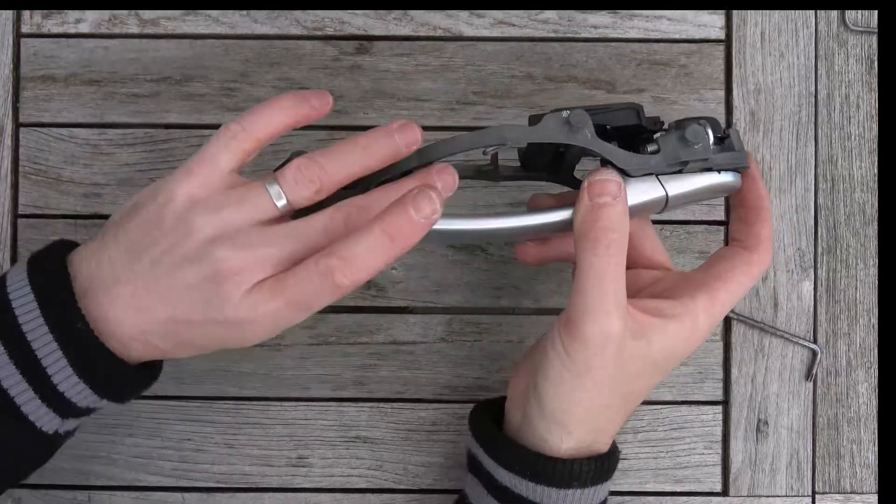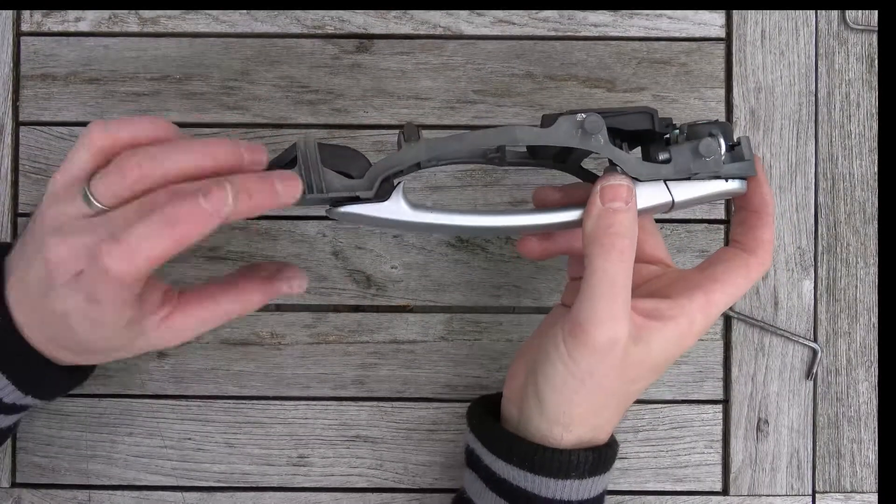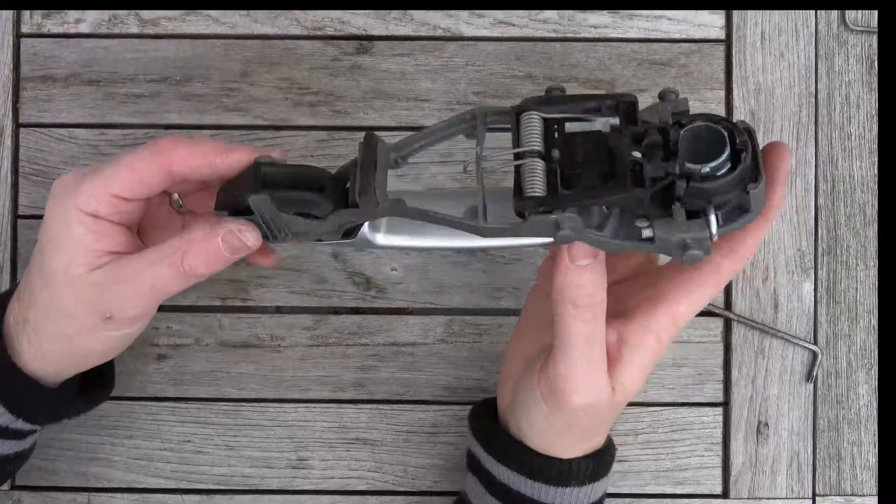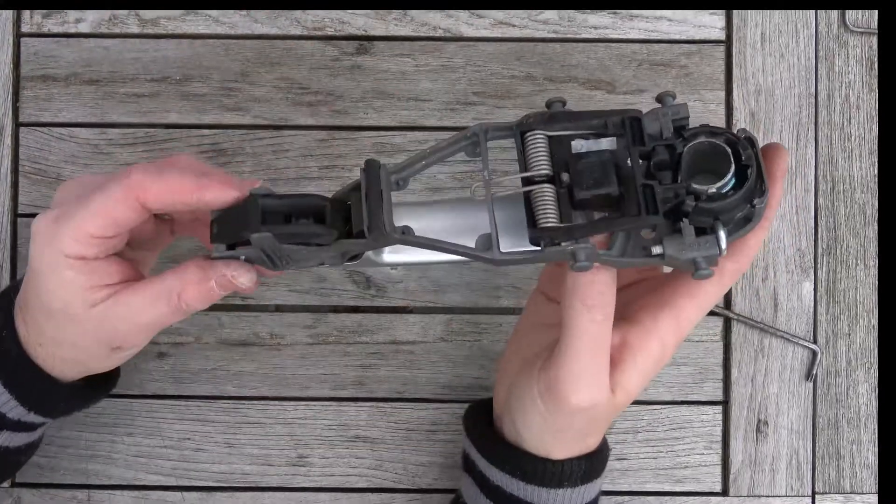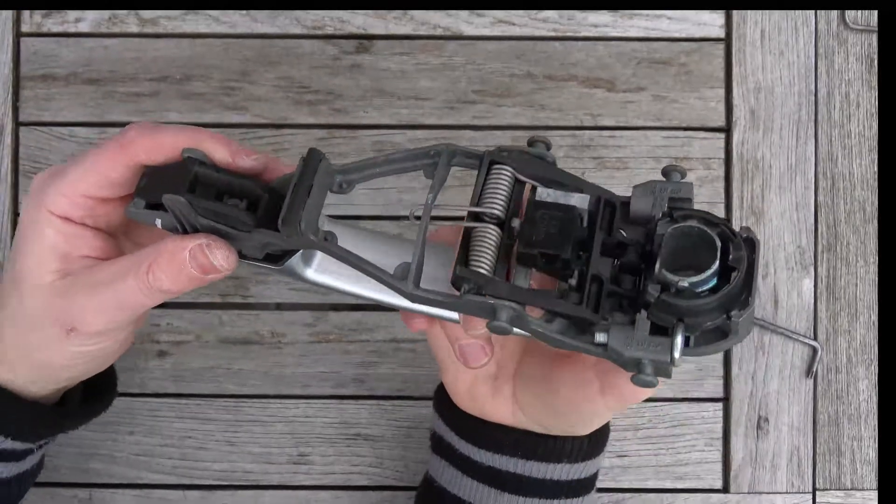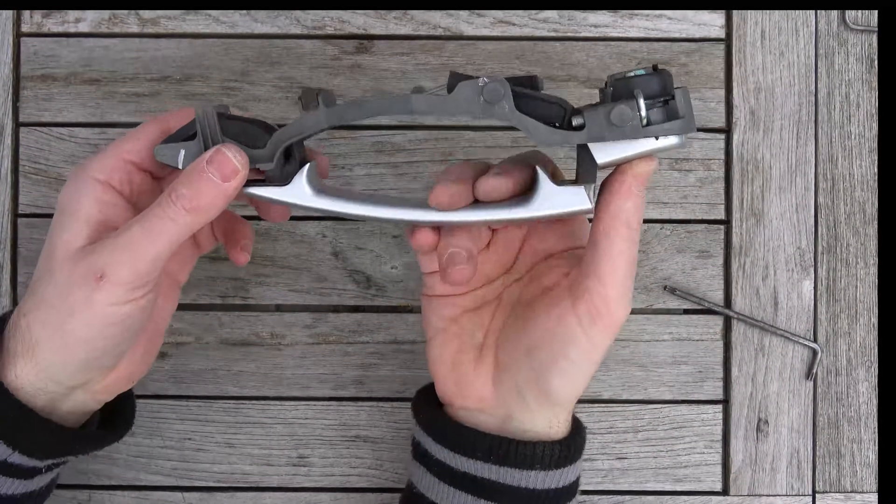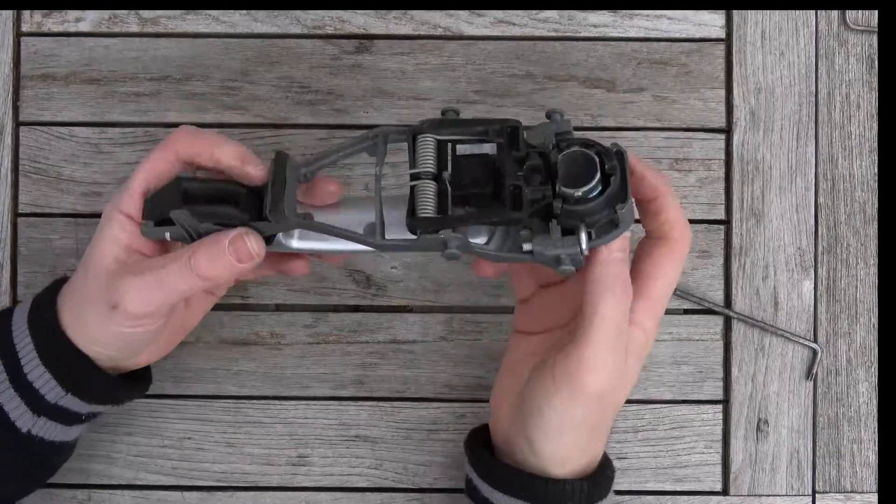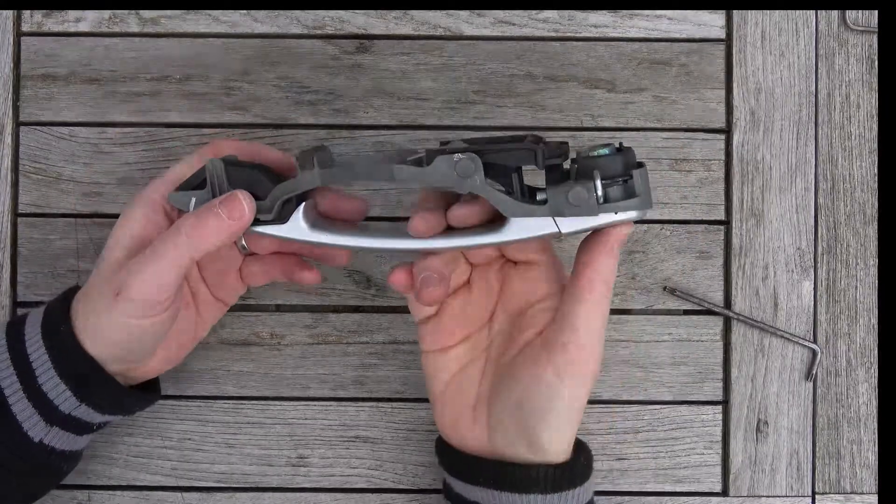But now when you can see it out, it makes a lot more sense. So that is how the door handle works on a Volkswagen Golf Mark 5 and hopefully other models as well. If you enjoyed this video, give it a big thumbs up. Take care.